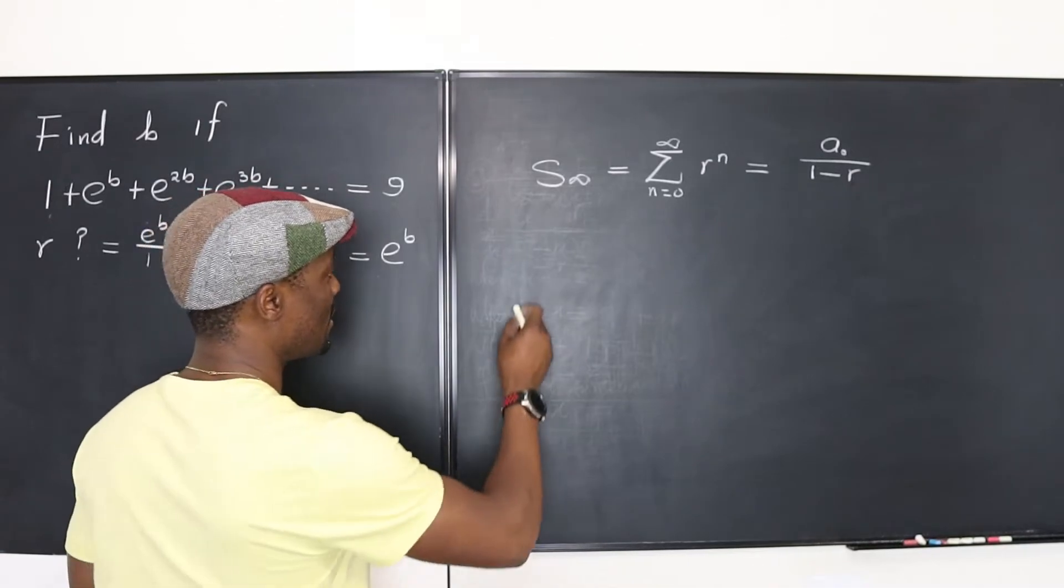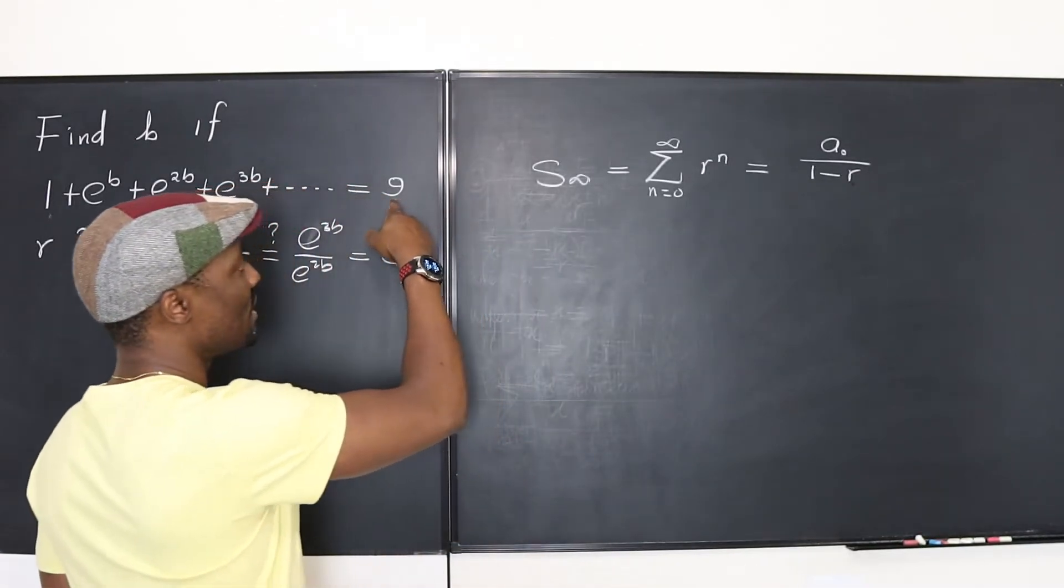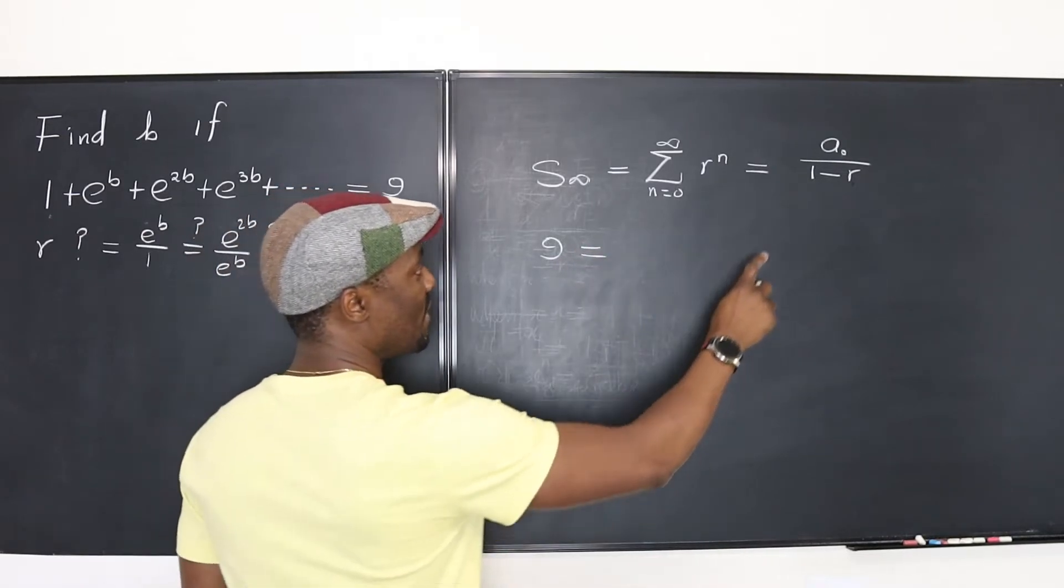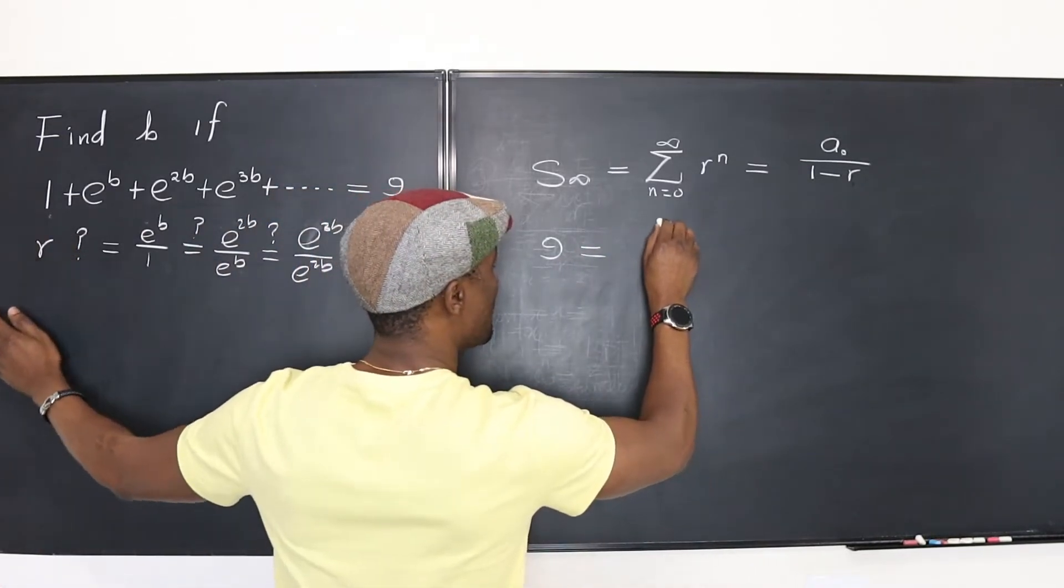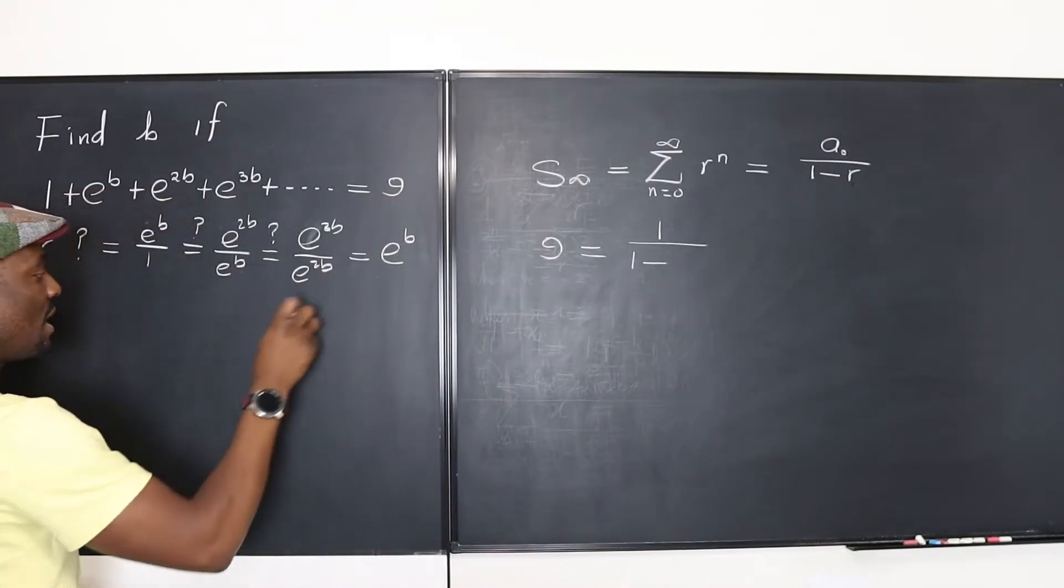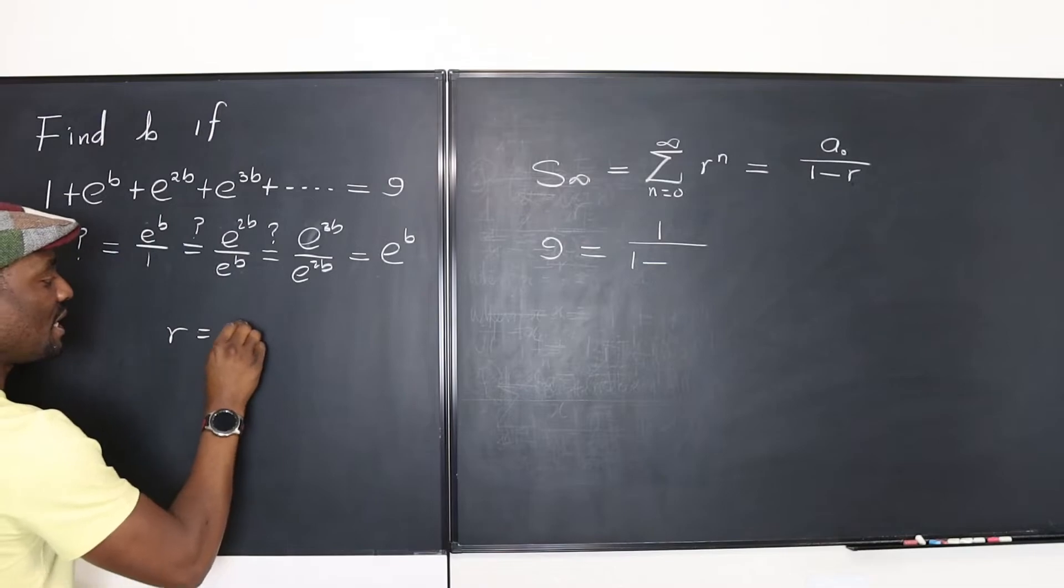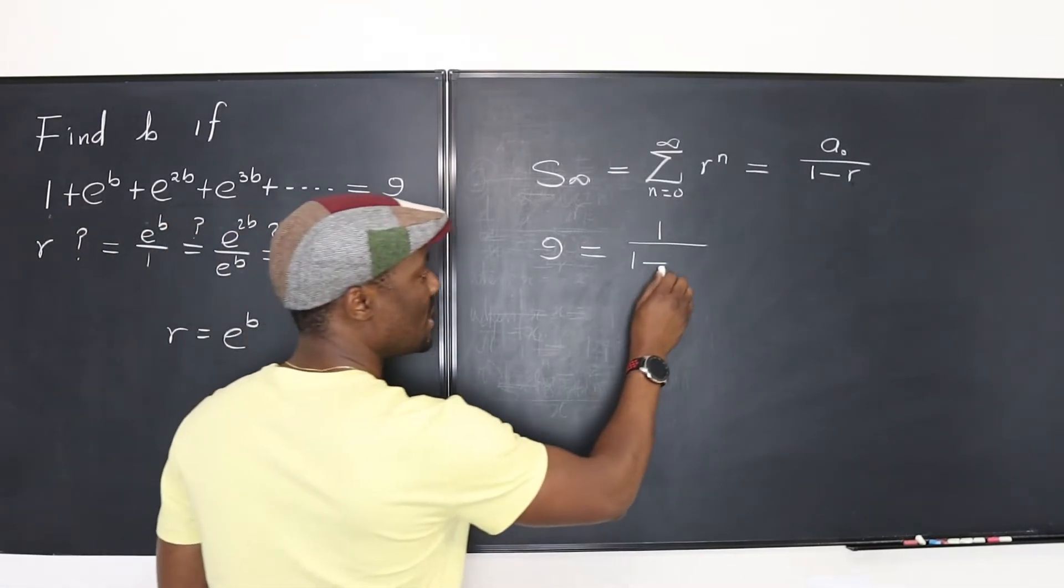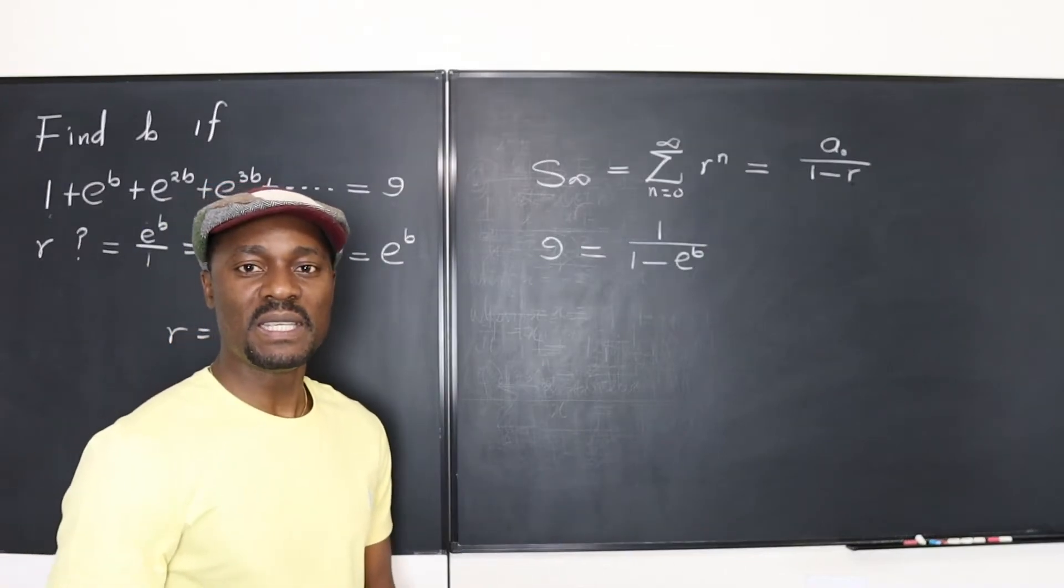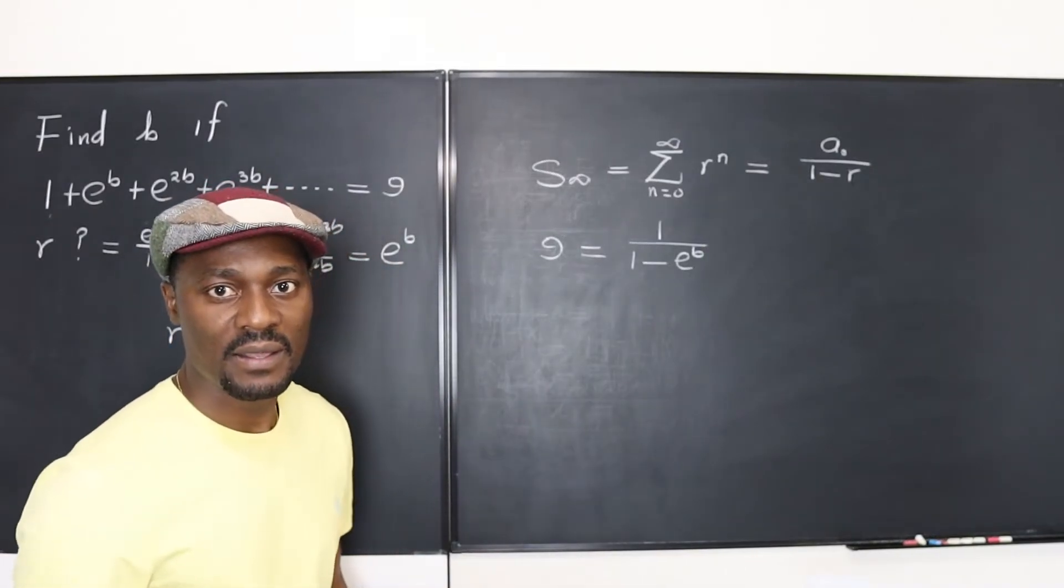So, let's take our sum. The sum to infinity, which they've given us, is 9, is equal to the first term in this sequence, which is 1, divided by 1, minus, what is the common ratio? Well, we found the common ratio. Our common ratio is e to the b. So, it's going to be e to the b. We just want to know what b is.